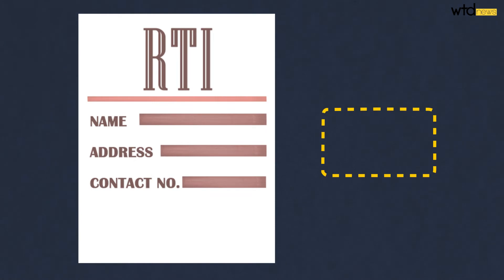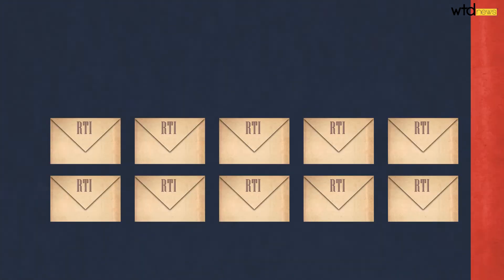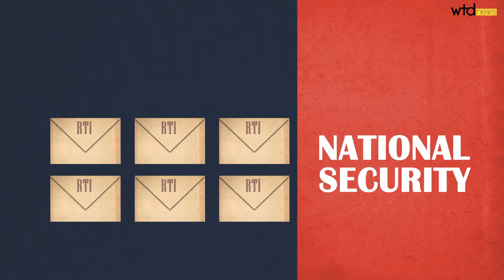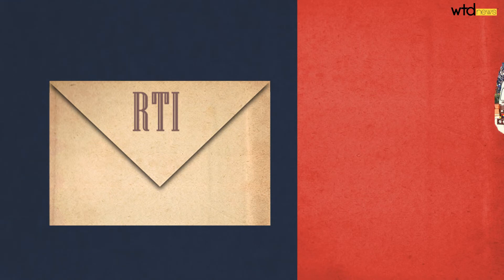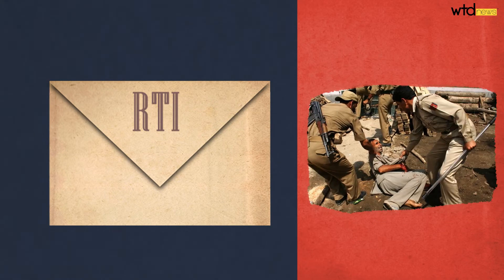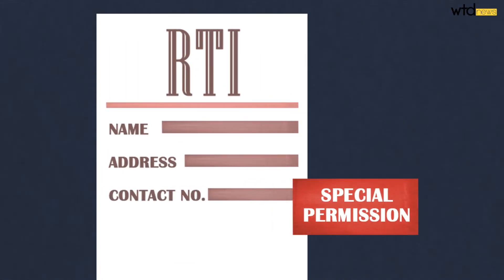Sometimes rejections are purely due to filing errors, in which case you can try again. But most times it's because you ventured into the restricted section, where information is protected from the right to information for national security reasons, or is just too old to retrieve. So if it has anything to do with defence, especially in Jammu and Kashmir or the Northeast, it's probably getting rejected. And in case you have questions related to human rights violations, expect a much longer waiting period, since such RTIs need special permission from the central government.